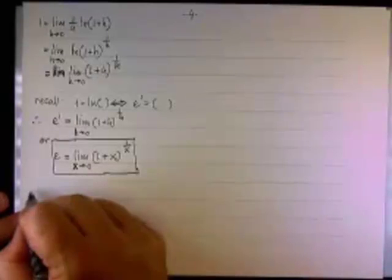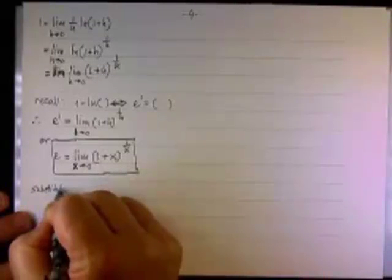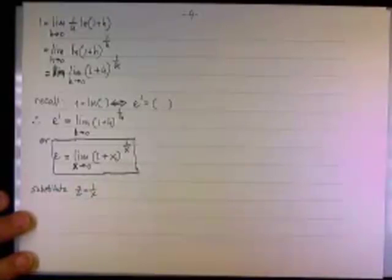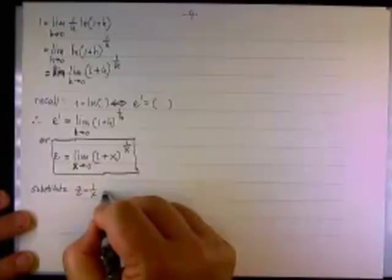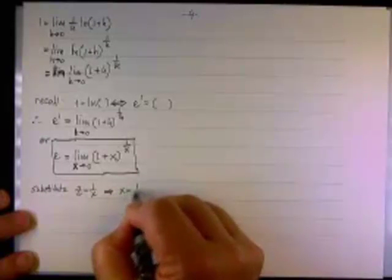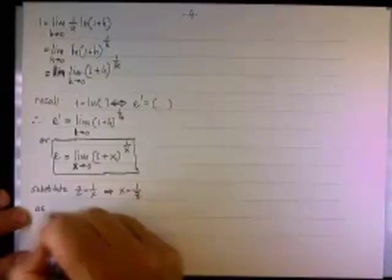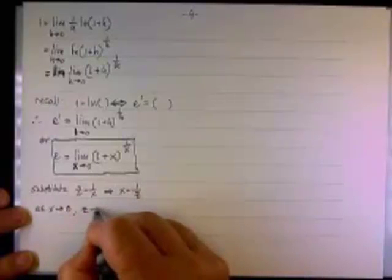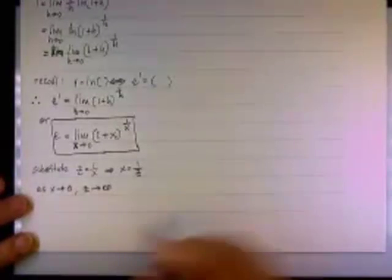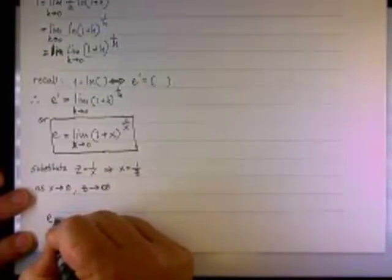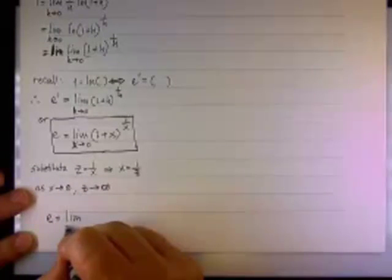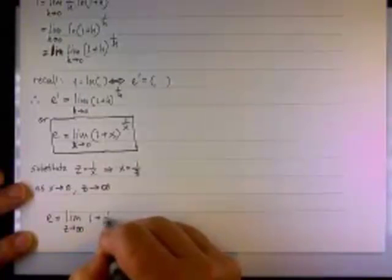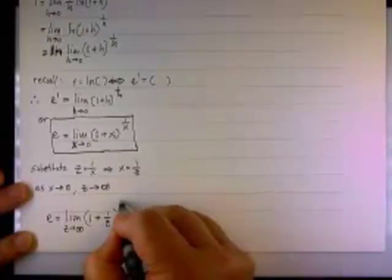In addition, I can do a little variable substitution. Let's substitute Z with one over X, so X will be replaced by one over Z. Then, as X goes to zero, Z — being one over X — will go to infinity. Replacing X with Z gives another definition of the number E: E equals the limit as Z goes to infinity of (1 + one over Z) raised to the power of Z.